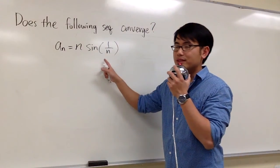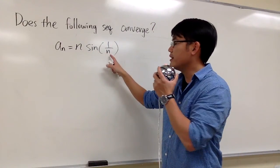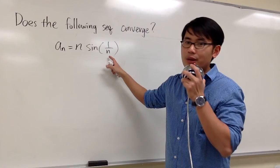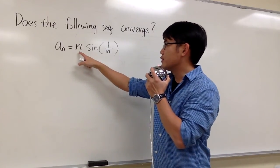We are going to see if this sequence, n times sine of 1 over n, converges as n approaches infinity. So if n goes to infinity, let's do a quick check.